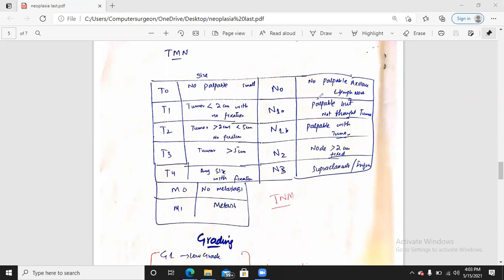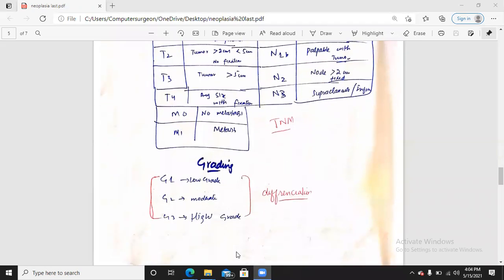N0 has no palpable axillary lymph node. N1 palpable is a lymph node, but not the tumor it is present. N1B is a palpable, have more than two centimeters fixed and M system M0 mean no metastasis M1 mean metastasis present or absent depending upon the differentiation. If we have low grade means highly differentiated so it is low grade tumor moderate it is less differentiated and G3 grade 3 it is high grade cancer which has lack of differentiation and anaplastic in nature. So this is a grading system which is also very important.